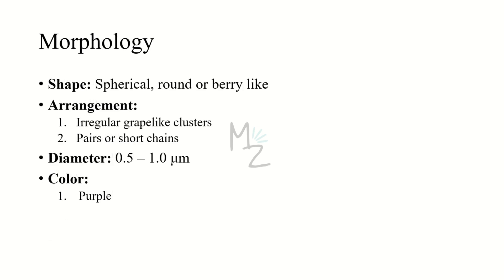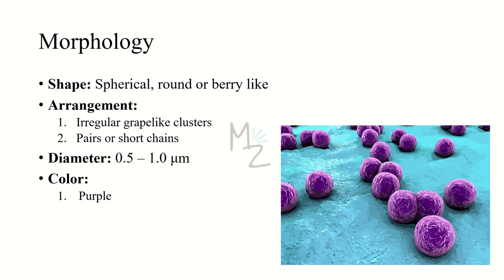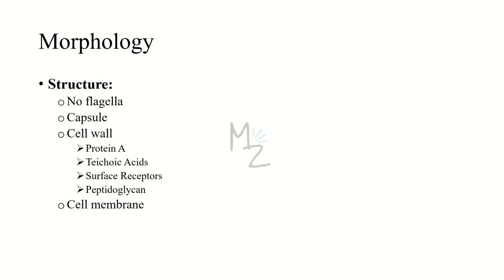Morphology — shape: it is spherical, round, or berry-like. It is arranged in irregular grape-like clusters, and also in pairs or short chains. Its diameter varies from 0.5 to 1 micrometer. It is purple in color because it is gram positive — gram-positive bacteria stain pink or purple, while gram-negative bacteria stain blue. I have a detailed video on gram staining on my channel.